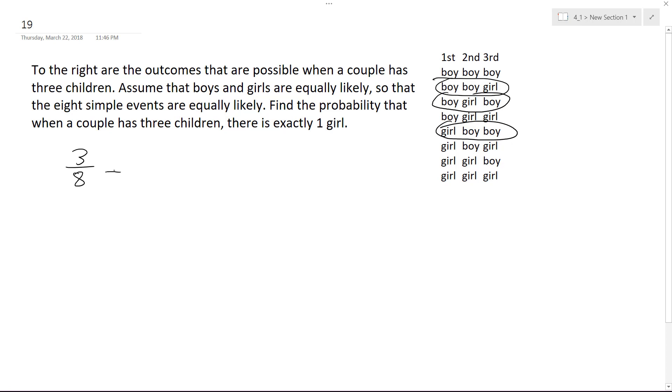So three out of eight ends up being equal to 0.375. So if you have three children, assuming all things are equal, there's a 37.5% chance that you will have exactly one girl and two boys.